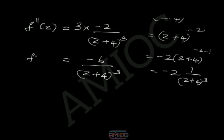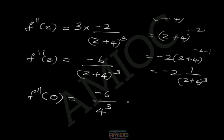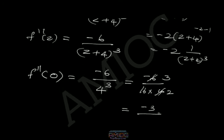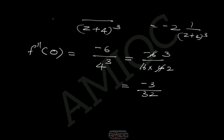Now we evaluate the second derivative of f at z₀ = 0. Substituting z = 0: f''(0) = −6/(0+4)³ = −6/4³ = −6/64. Simplifying: −6/64 = −3/32. Therefore, f''(z₀) = f''(0) = −3/32.